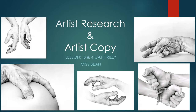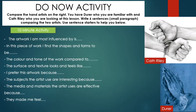Go on to the next slide and we'll talk about today's lesson. Your activity today is to compare the two hand artists: on the right you have Dürer, who you are familiar with, and Kath Riley, who you are looking at this lesson. Write six sentences — a small paragraph — comparing the two artists. Use the sentence starters below to help you, or if you find it easier to write a paragraph without them, that's absolutely fine. Compare the similarities and differences between the two images. You've got five minutes — pause the video now and off you go.